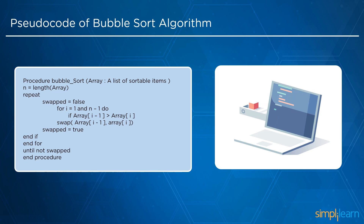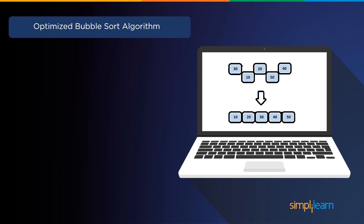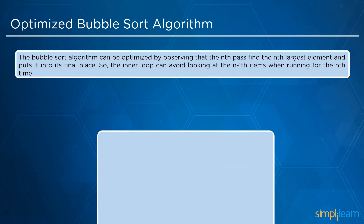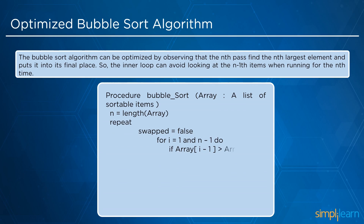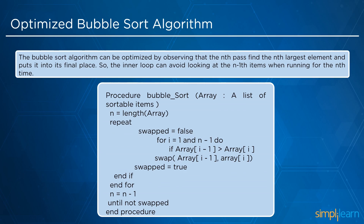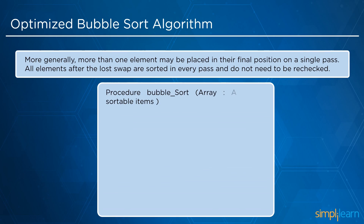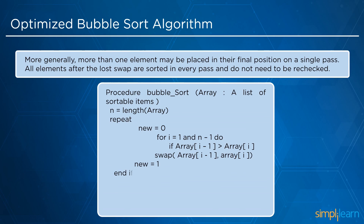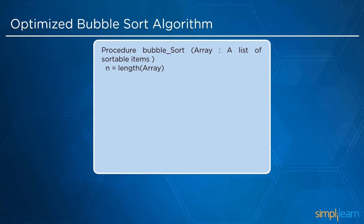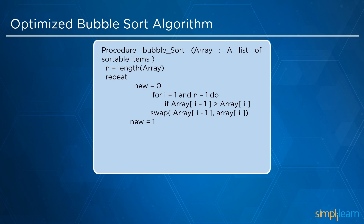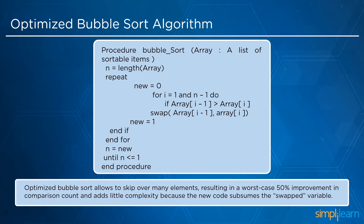Now let us learn about the optimized bubble sort algorithm. We can optimize it by programming the loop to avoid the comparison at the n minus 1 position after every iteration, since the nth element is already sorted in the previous iteration. More than one element may be placed in final position on a single pass. All elements after the last swap are already sorted and do not need to be rechecked. This results in a worst-case 50% improvement in comparison count.